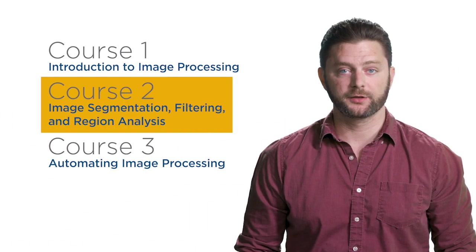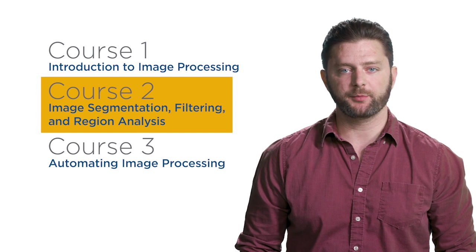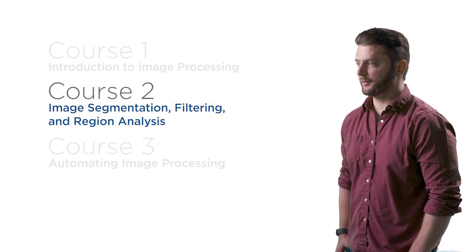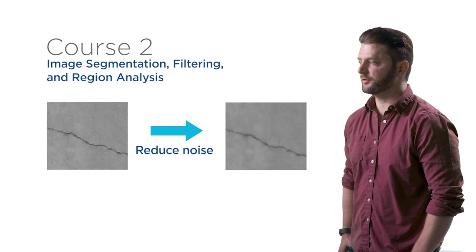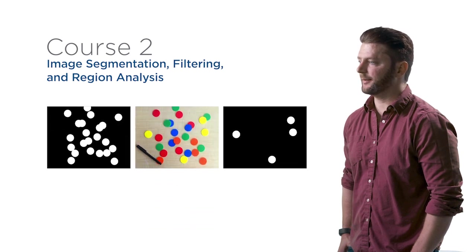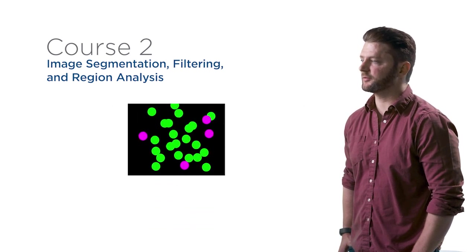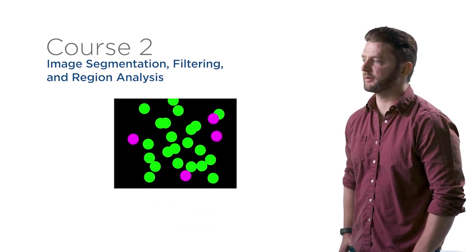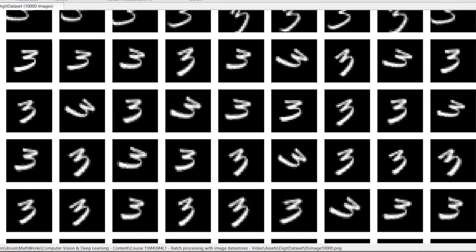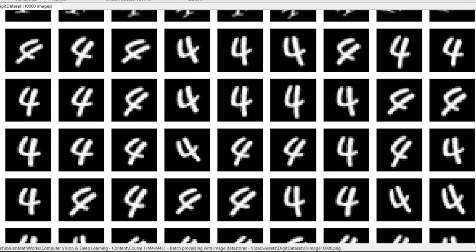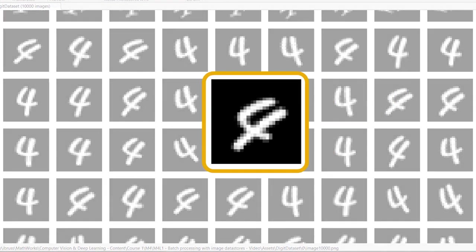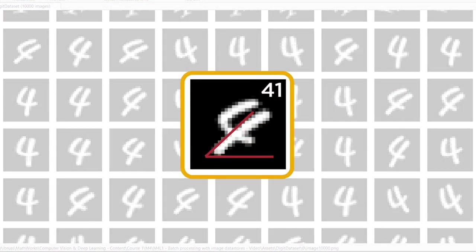In course two, you'll address common challenges to segmenting images. For example, you'll learn techniques to reduce noise and separate overlapping objects, ensuring that you isolate only the relevant information. Importantly, you'll analyze the regions you find, calculating properties such as area and orientation.